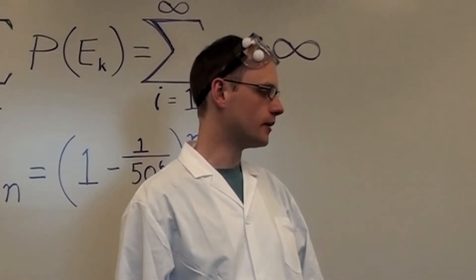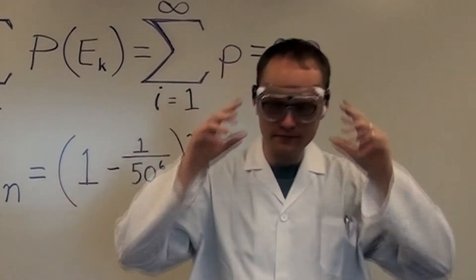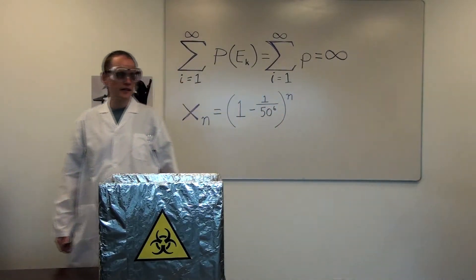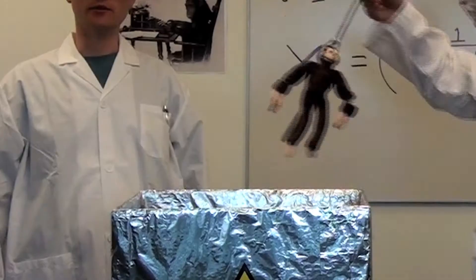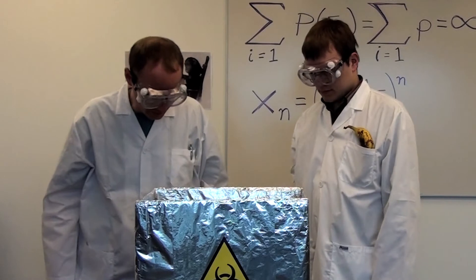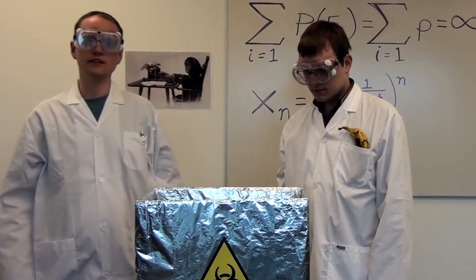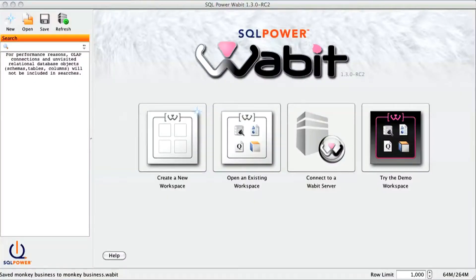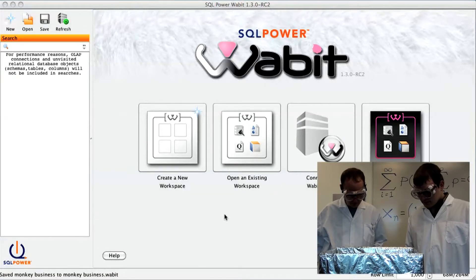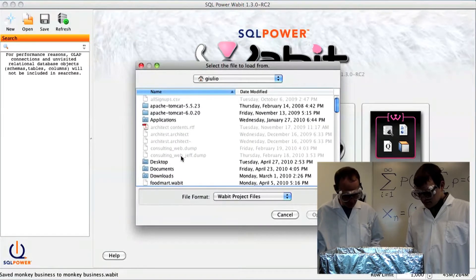And we're ready for monkey number one. And here comes my assistant with monkey number one. And it looks like he's found the keyboard. Let's take a look at the screen. Okay, and here goes our first monkey. Now this looks promising. He's creating a report now.